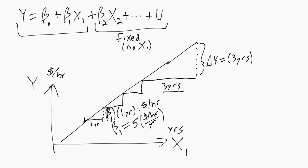Then just as in algebra our change in y associated with the 3 year increase in x1 will be the change in x times the slope. So in this case we have 3 years times 5 dollars per hour per year. So you can see the year cancels out. And then we'll multiply the 3 by the 5 and that will give us 15 dollars per hour for this vertical part. The change in y associated with a 3 year increase in x1.